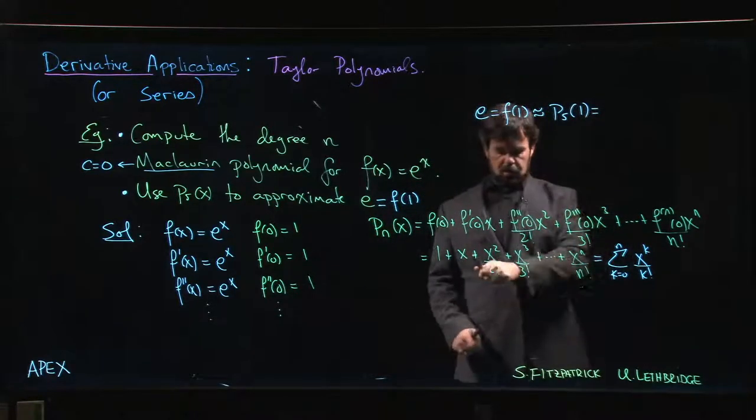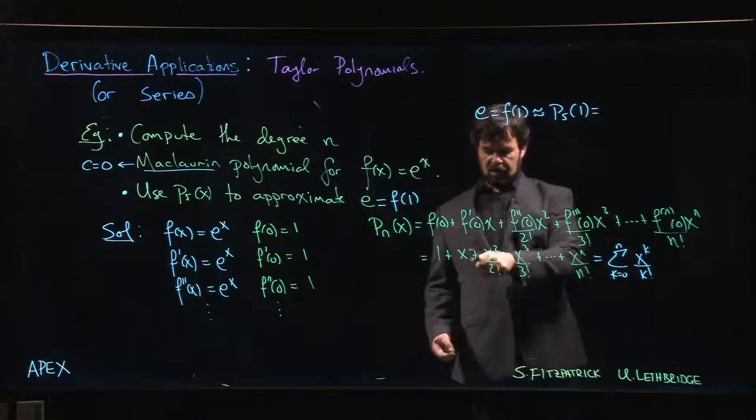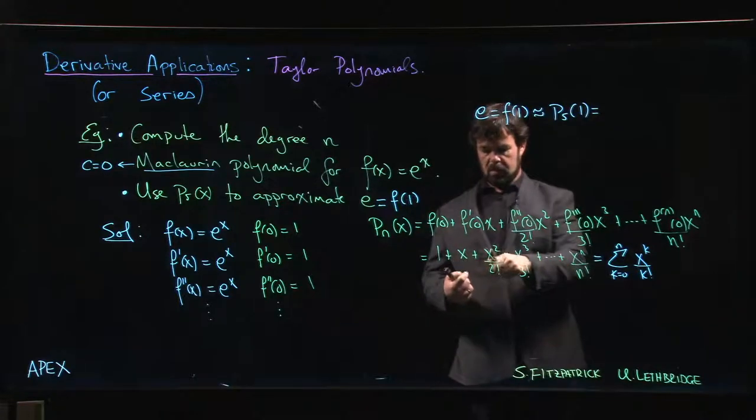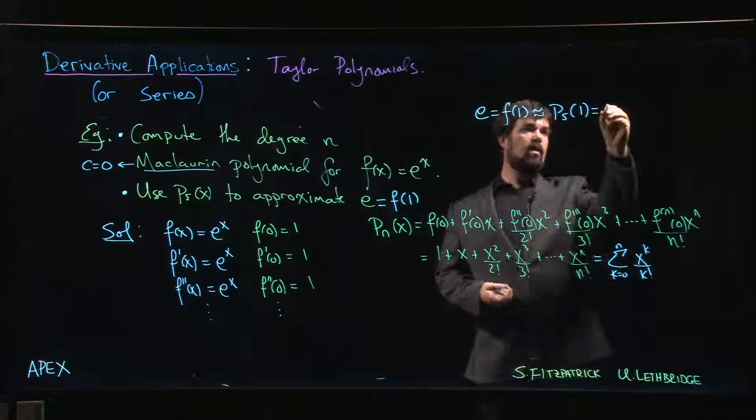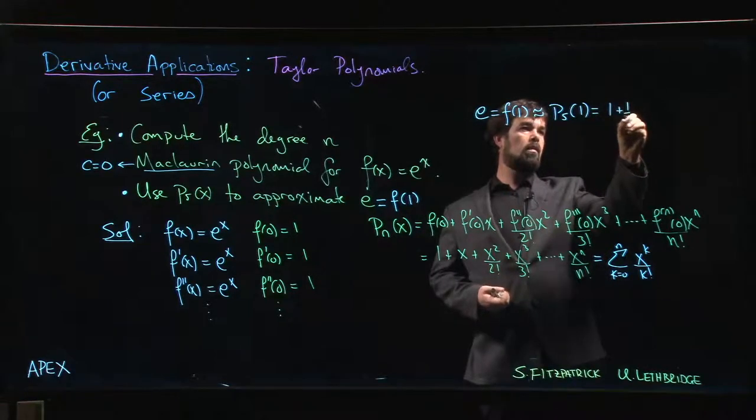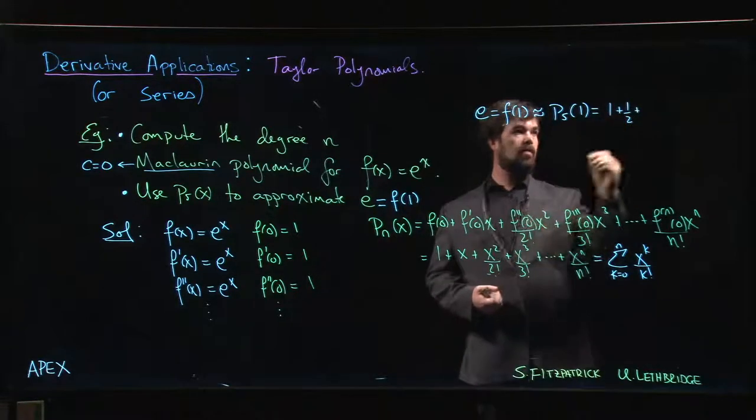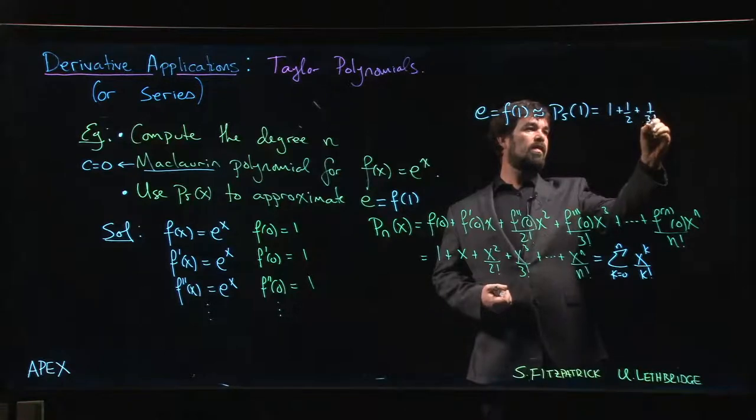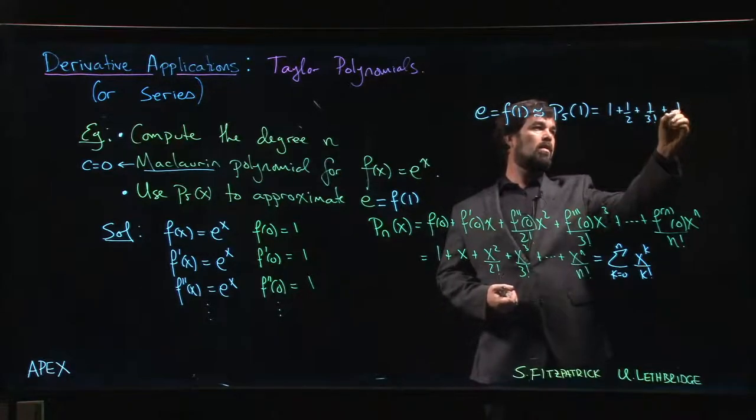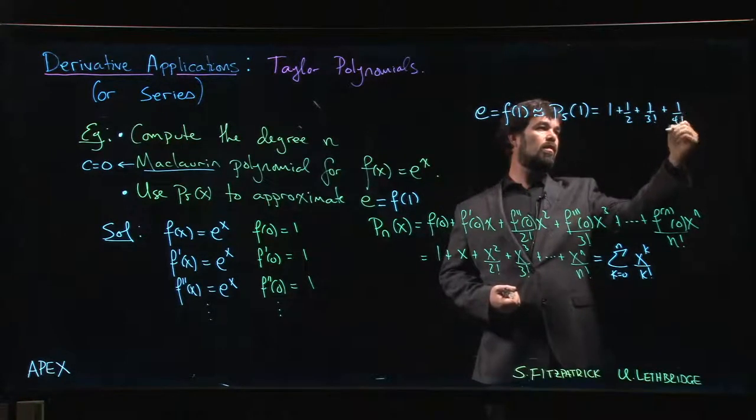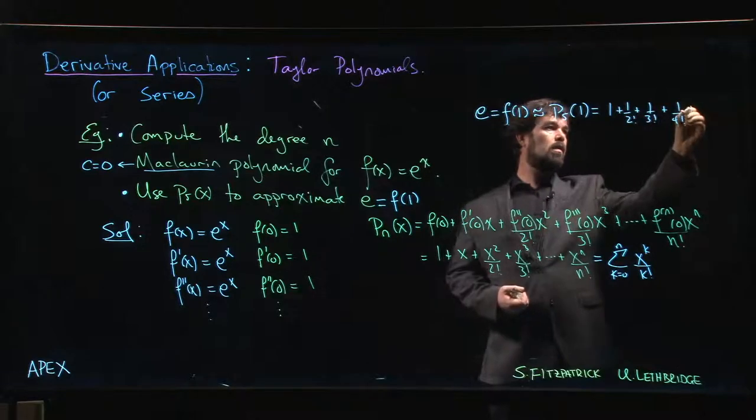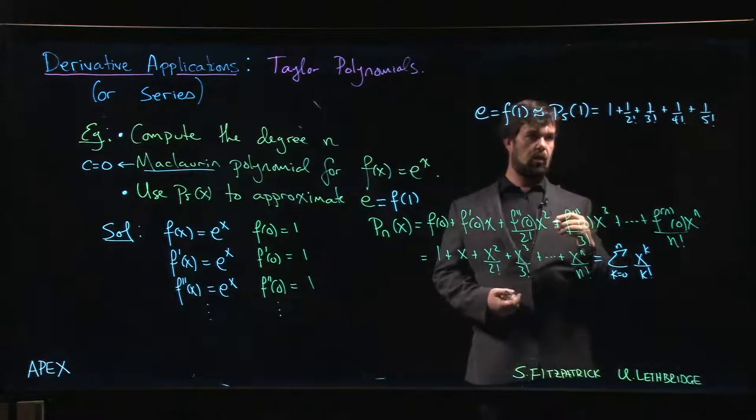So what's P5 at 1? Well, we go up to degree 5, we set x equal to 1. So that's a 1, that's a 1, that's a 1. So we have 1 plus 1 plus a half plus 1 over 3 factorial plus 1 over 4 factorial plus 1 over 5 factorial.